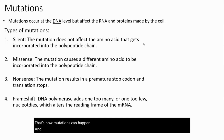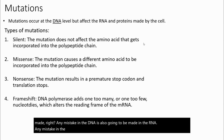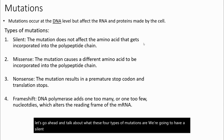Even though mutations happen at the DNA level, because DNA affects the RNA that's made, any mistake in the DNA is also going to be reflected in the RNA. Any mistake in the RNA may or may not affect the protein made during translation. There are four types of mutations we'll discuss: silent, missense, nonsense, and frameshift.